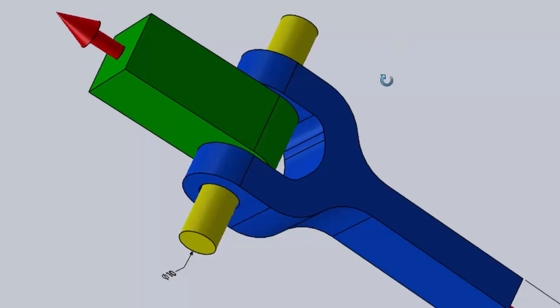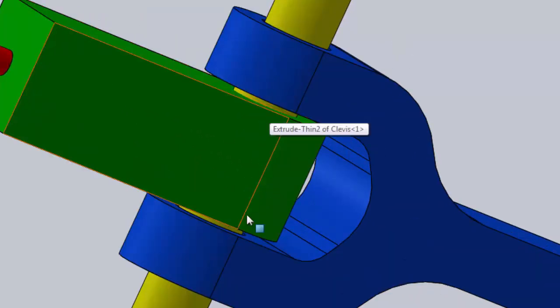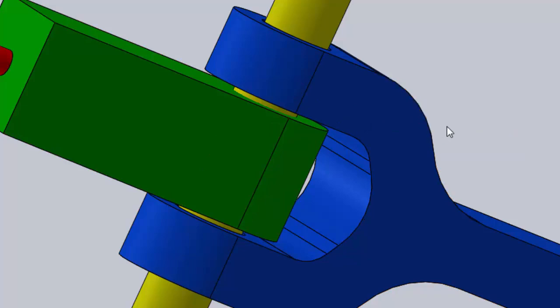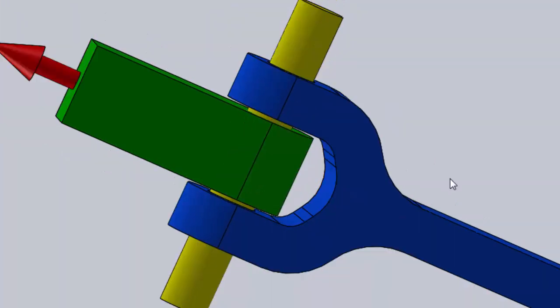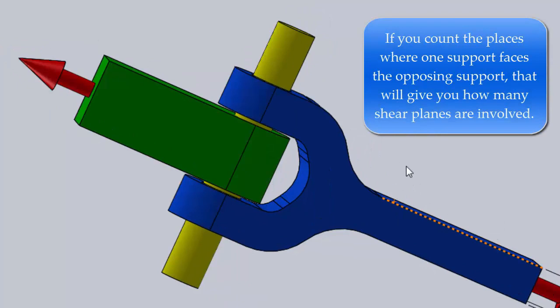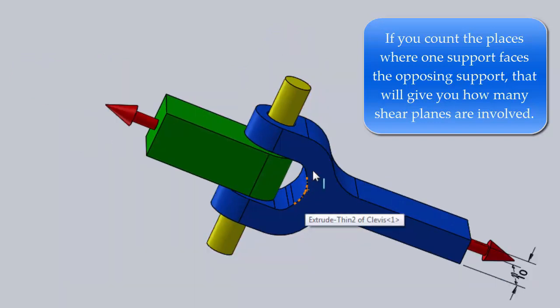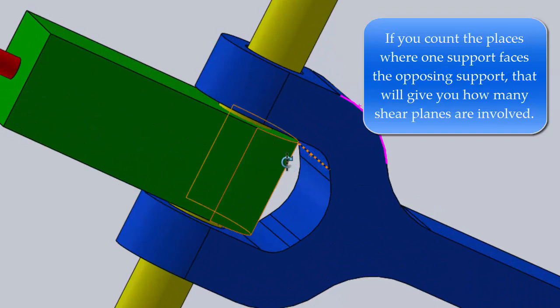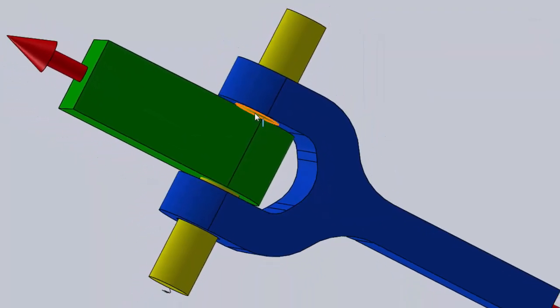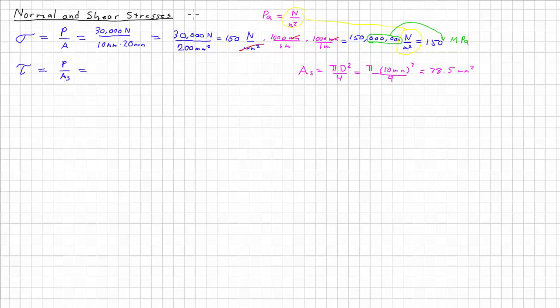Both of those cross-sections would have to fail for this whole thing to fail. So this is what's called double shear, and it's a great design technique because you can have something as simple and cheap as a pin, and you can have multiple cross-sections that have to fail, and so they simply multiply out. In this case, we have two, so we multiply by two. So our area in shear is actually twice that.